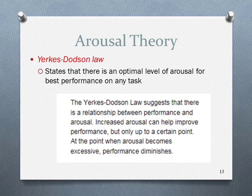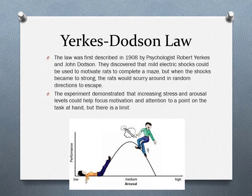However, if the platform were three stories high, that would be way past my optimal arousal and I would not do the behavior. Once we hit our peak, performance declines because we're not thrilled anymore. The law was first described in 1908 by psychologists Robert Yerkes and John Dodson. They discovered mild electric shocks could motivate rats through a maze, but when shocks became too strong, the rats would scurry to escape. The experiment showed arousal helps focus motivation up to a point, but there is a limit.